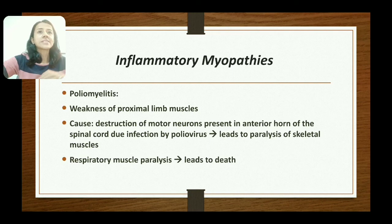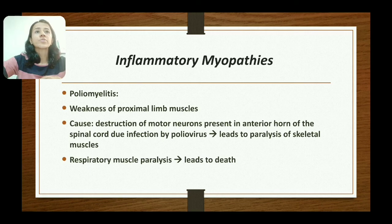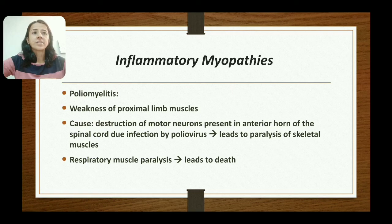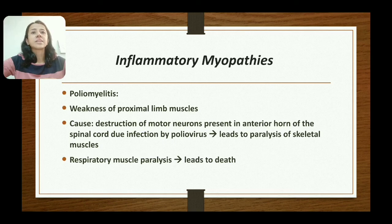Next is inflammatory myopathy as seen in poliomyelitis. There is weakness of the proximal limb muscles due to destruction of motor neurons in the anterior horn of the spinal cord, caused by infection with the poliovirus. This results in paralysis of skeletal muscle and may lead to death when the respiratory muscles are paralyzed.